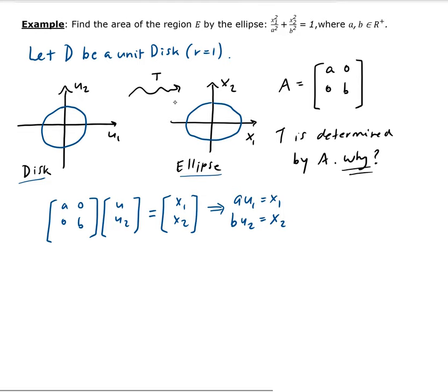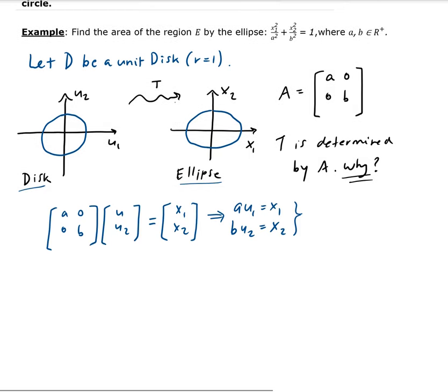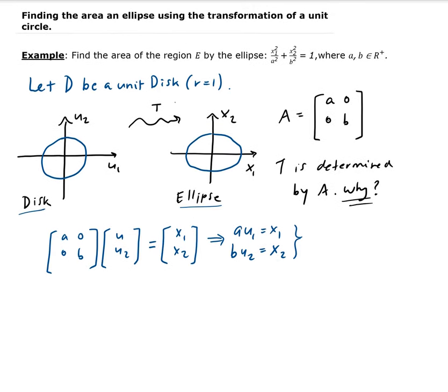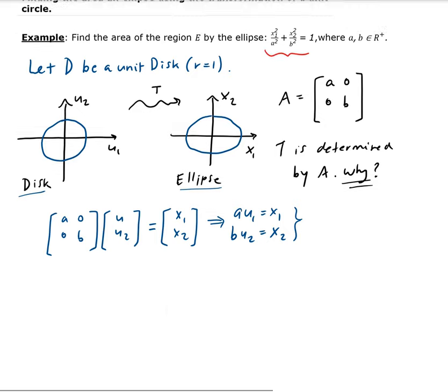We have this system of equations. So now what we can do is we can substitute x1 and x2 into the equation of the ellipse here. So let's do that now.